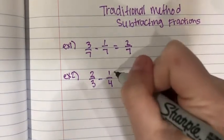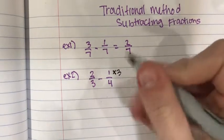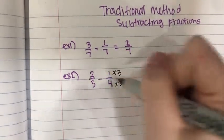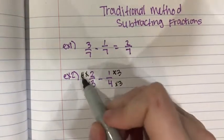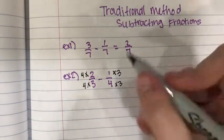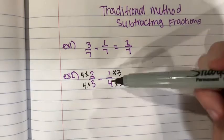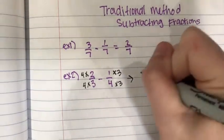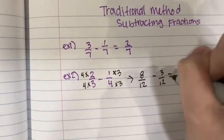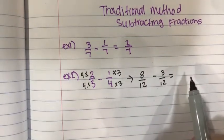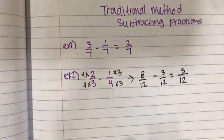So you are going to multiply 3 times 1 and 3 times 4. Then you are going to multiply 4 by this fraction as well. So you have 4 times 2 and 4 times 3. This gives you two more fractions that are equivalent to those but they have the same denominator. So it is 8 over 12 minus 3 over 12. And then since they have the same denominator you subtract straight across. So 8 minus 3 equals 5 and bring over your denominator.